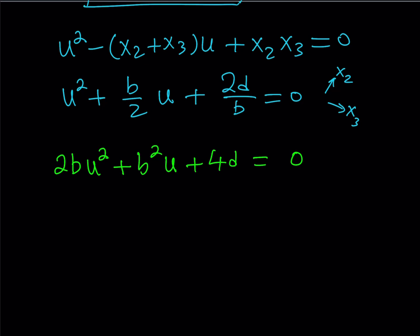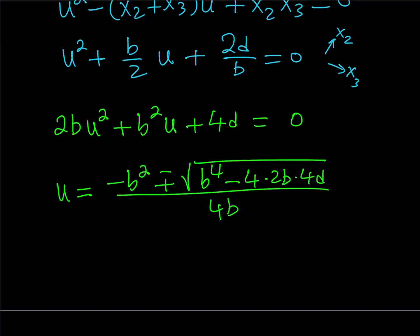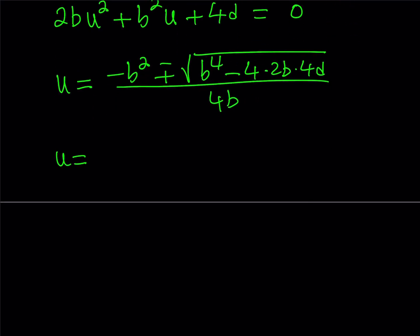So this is a quadratic in u and we can solve it using the quadratic formula. When we do, we're going to be getting the values of x2 and x3 from here. So u equals negative b, which is negative b squared, plus minus the square root of b squared, which is b to the fourth power, minus 4ac: 4 times 2b times c which is 4d, divided by 2 times a, which is 4b. Let's simplify this, we get negative b squared plus minus b to the fourth minus 32bd, all over 4b.